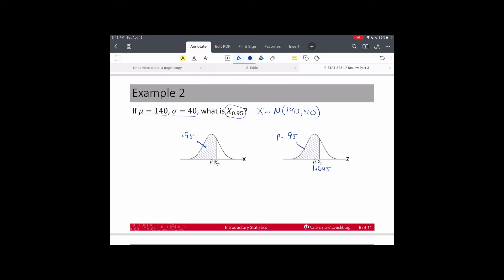This is 1.645. That's my z-score. And I want to know x sub p, which is x sub 0.95. So, then my formula is x sub 0.95 is equal to mu plus sigma x times z sub p. Now, mu sub x is 140 plus sigma sub x, which is going to be 40, times z sub p, which is 1.645. And this is equal to 205.8. So, this is my 95th percentile.